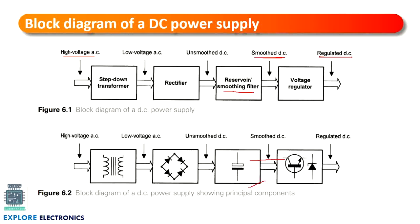In the block diagram you can observe the components: the step-down transformer has a coil; in place of the rectifier you can observe a bridge rectifier arrangement; the reservoir and smoothing filter uses a capacitor; and the voltage regulator has a Zener diode as well as a transistor arrangement. These are the principal components present in these particular blocks.